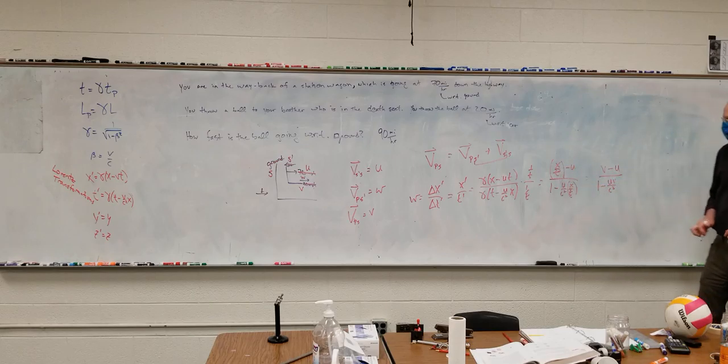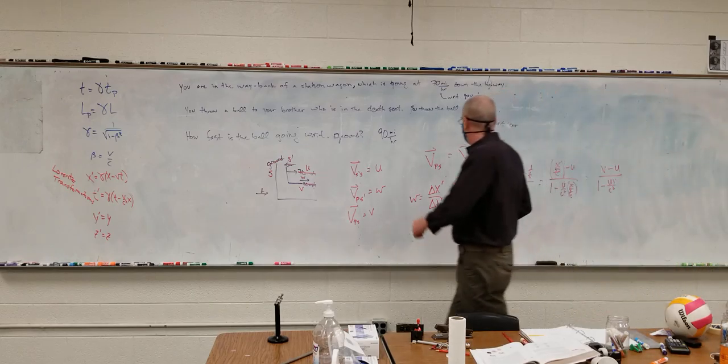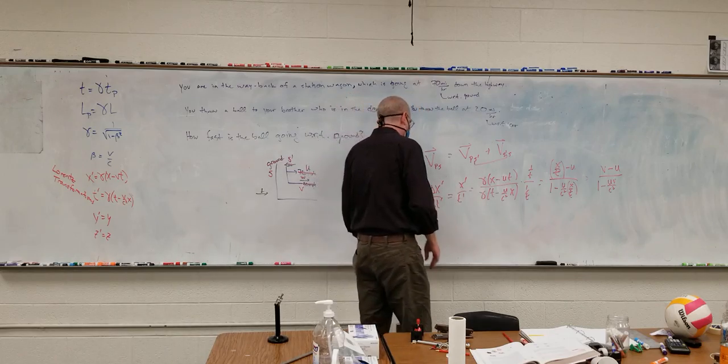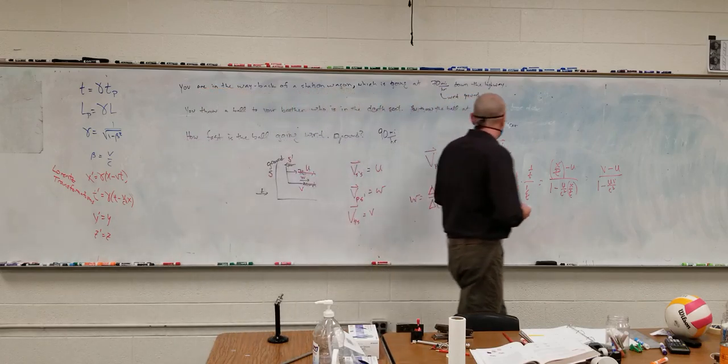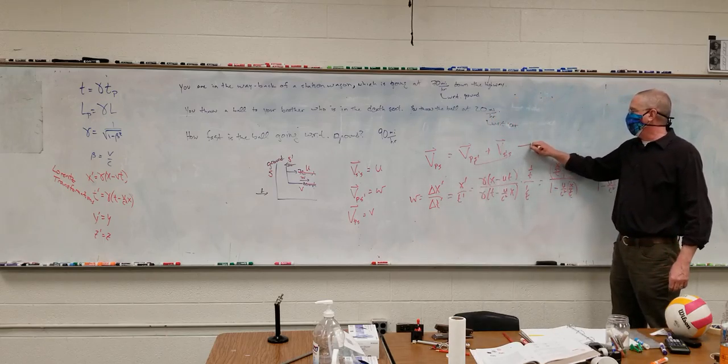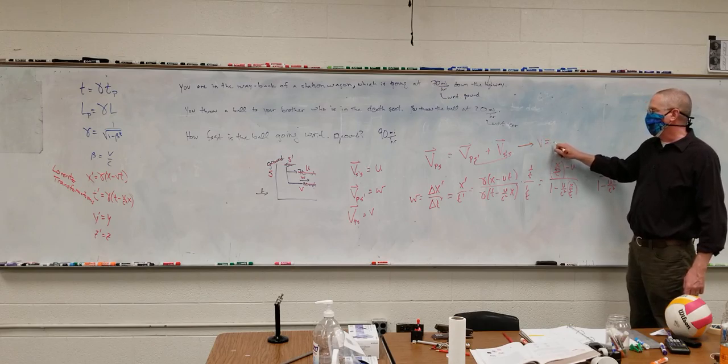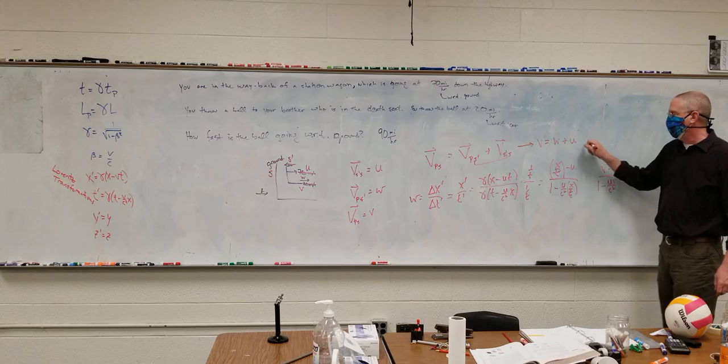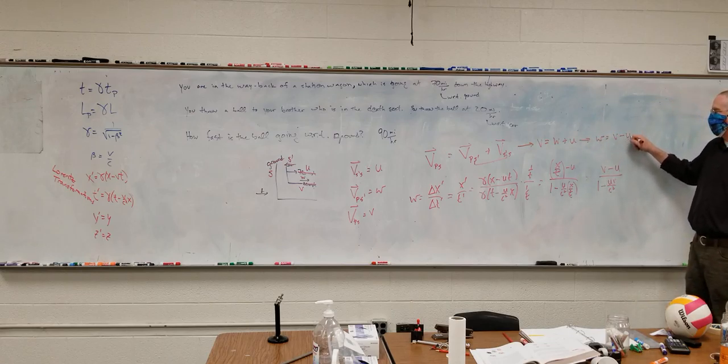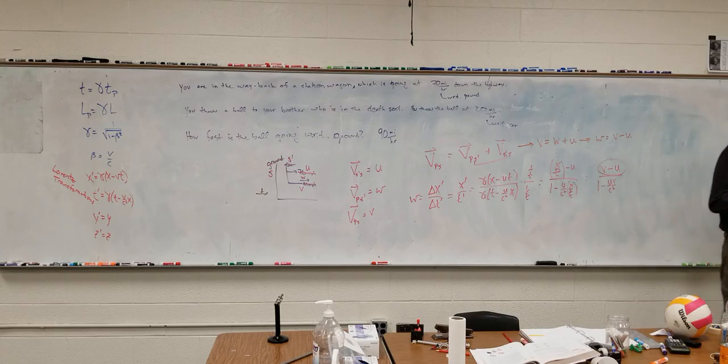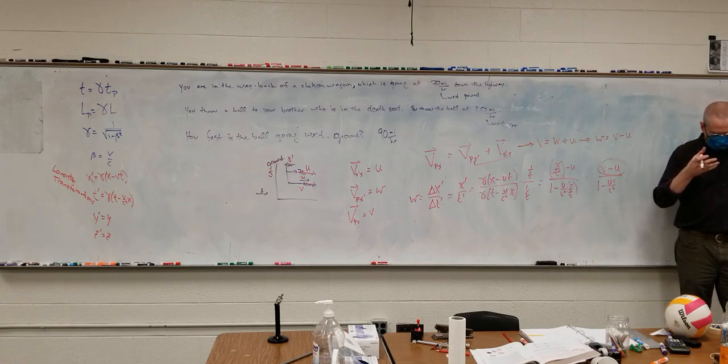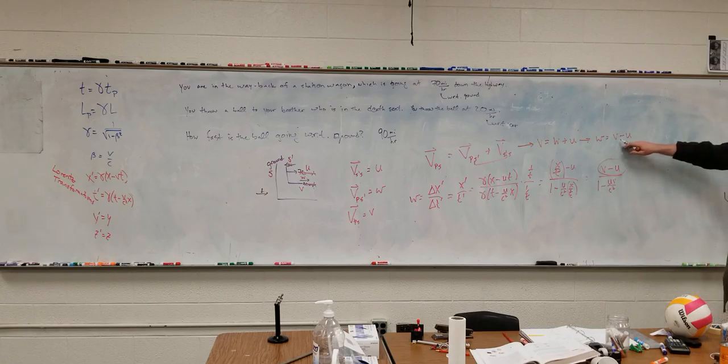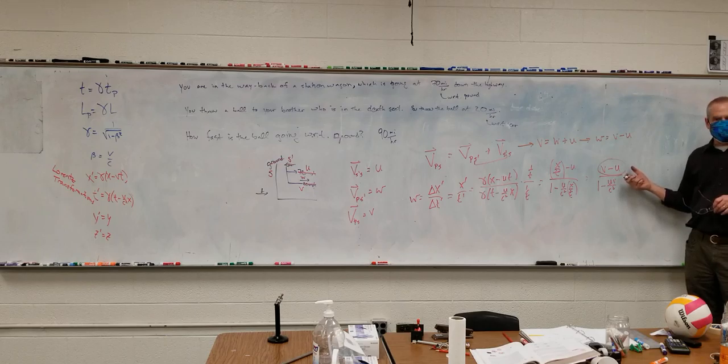So this becomes V minus U over one minus U over C squared. Because again, you've got this X over T. If this were Galilean relativity, we don't have to, T is the same for both of them. The distance that was actually traveled is the same for both of them. If this were Galilean relativity, this would be V is equal to W plus U. Or W is equal to V minus U. Notice, that's basically what our numerator is when we bring relativity into it.